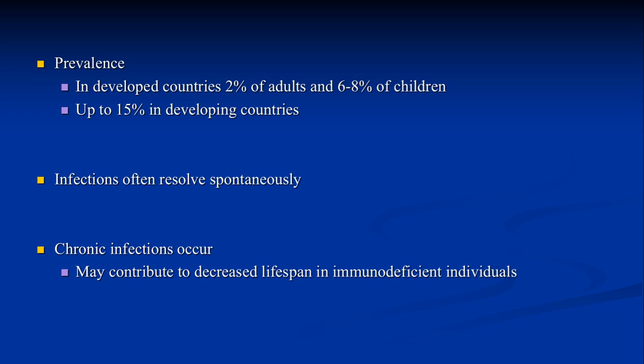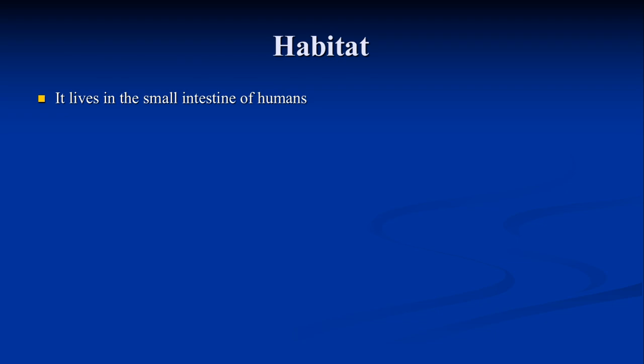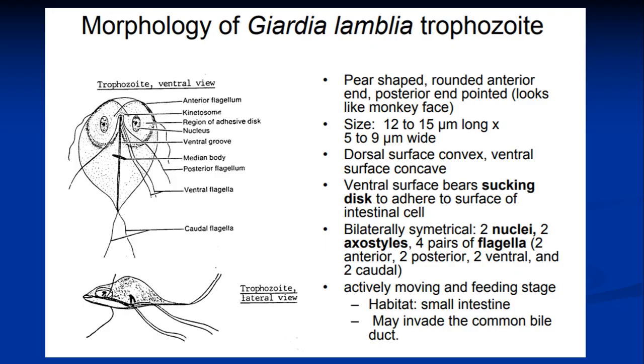In developed countries, because of good hygienic conditions, the prevalence rate in adults is around 2 percent, while in children it is between 6 to 8 percent, making it below 10 percent overall. Infection often resolves spontaneously without any treatment; however, treatment helps it resolve much quicker. Chronic infections may occur, and that mainly occurs in immunocompromised individuals. Habitat: the parasite lives in the small intestine of humans, which we will discuss later.